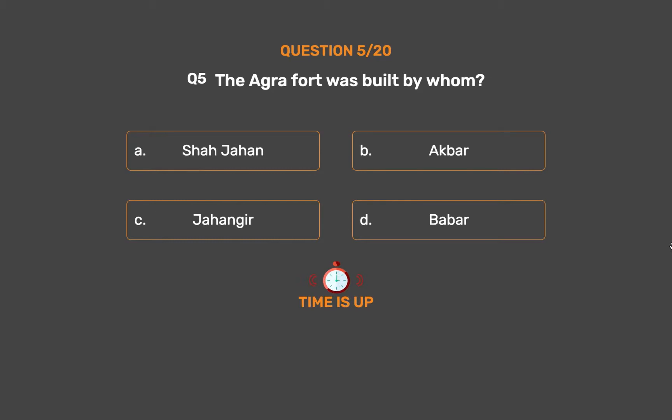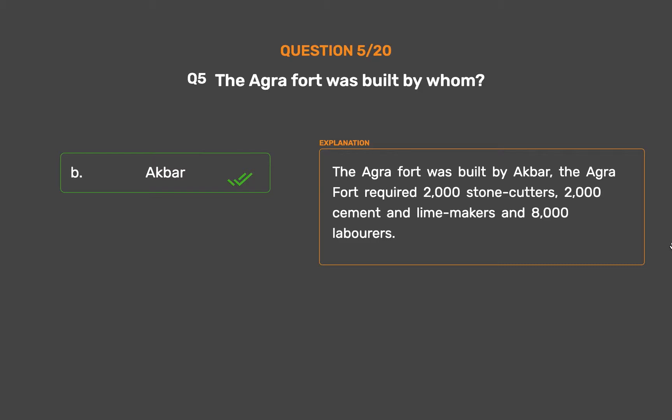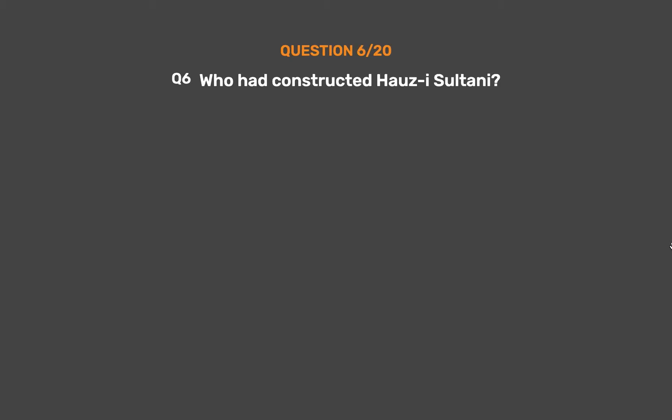The correct answer is Option B: Akbar. The Agra Fort was built by Akbar. The Agra Fort required 2,000 stone cutters, 2,000 cement and lime makers, and 8,000 laborers.